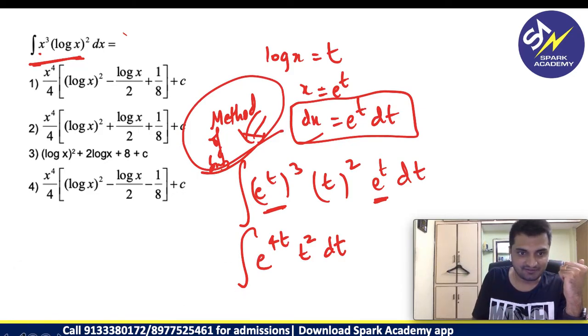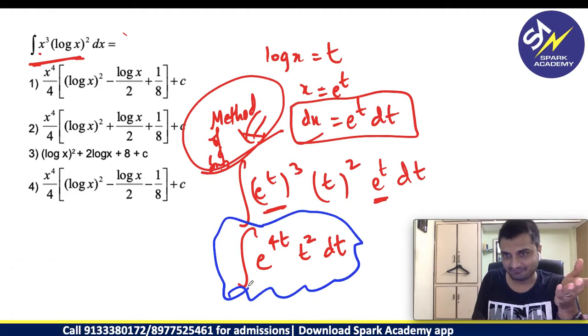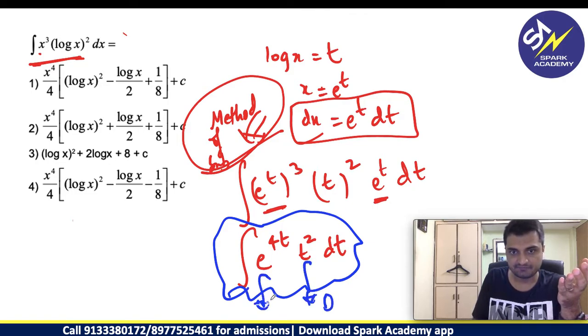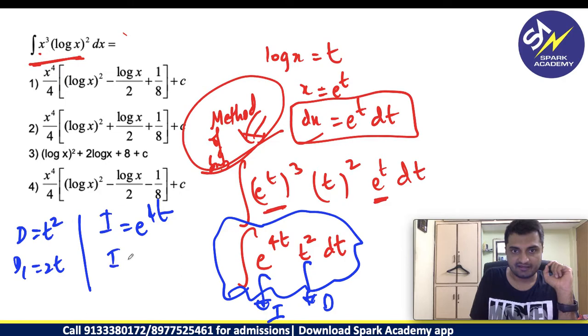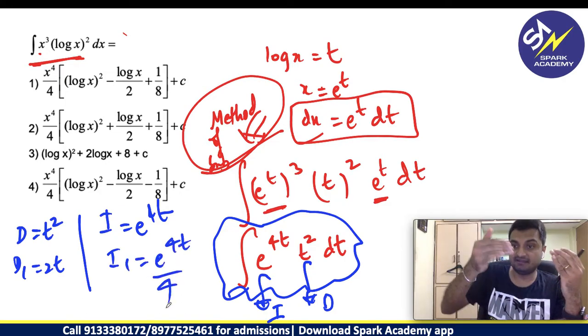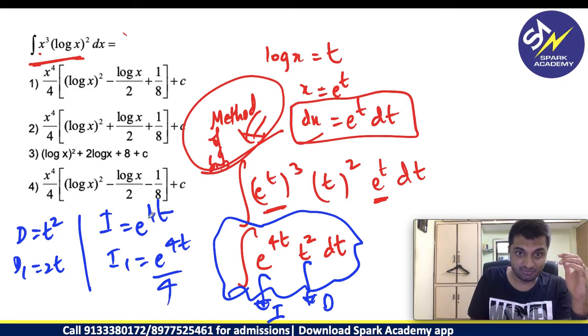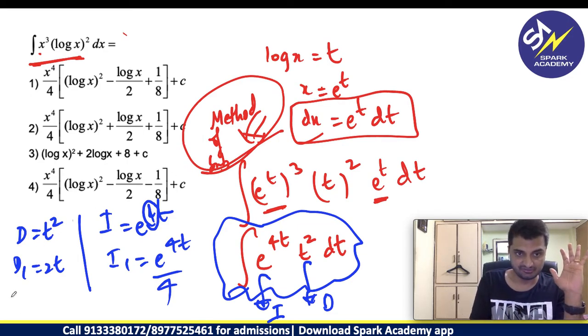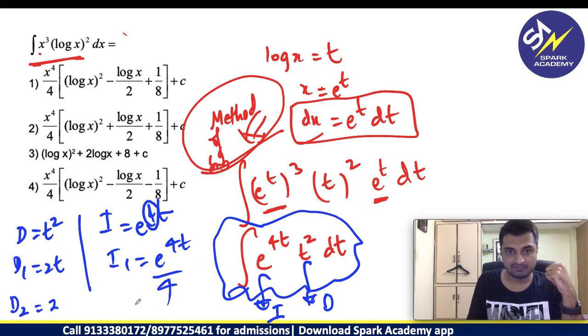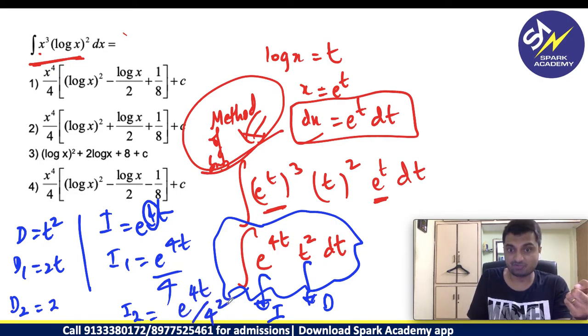Now look at this. This simply looks like our DI rule. This is my algebraic function, so this is D. This I can call I. So D I can write as t², I can write as e⁴ᵗ. D₁ will be derivative of t², which is 2t. I₁ will be e⁴ᵗ/4. Whenever you have integration and you have a coefficient, you divide by that coefficient. In differentiation, you multiply by that coefficient; in integration, you divide by that coefficient. D₂, the derivative of 2t will be 2. I₂, integral e⁴ᵗ is e⁴ᵗ again, but here you have 4, so you will have 4². Similarly, D₃ you can do which will be 0, and I₃ will be e⁴ᵗ/4³.